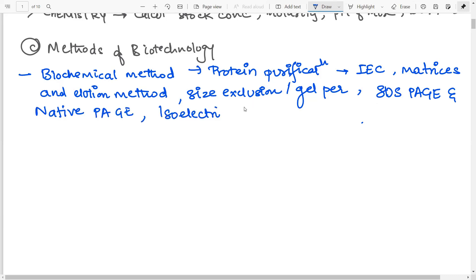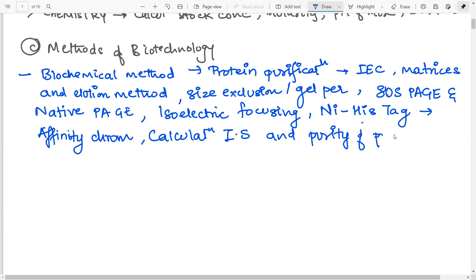After that, isoelectric focusing. Then you have the Ni-NTA stack separation, which is actually a part of affinity chromatography. So this is affinity chromatography. You must have come across this question in gate as well. Then you have the calculations for ionic strength. So how to calculate the ionic strength and how to calculate the purity of protein after purification. How much fold purification have you achieved?